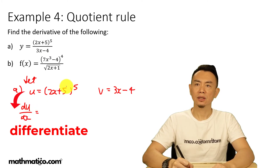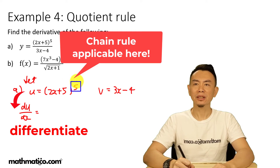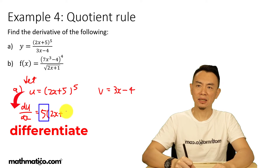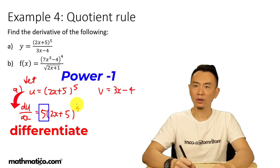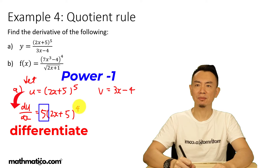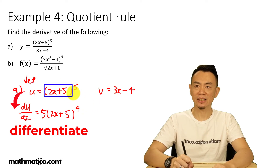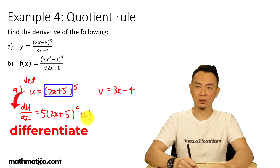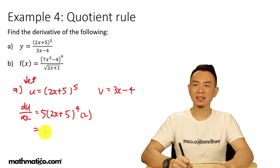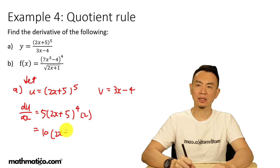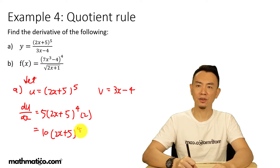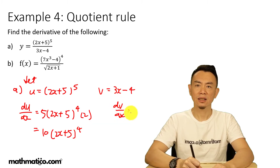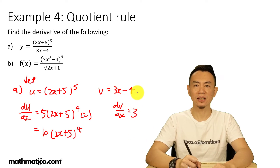Now we differentiate each one separately. For du/dx, we are going to use chain rule: bring down the power of 5, times (2x plus 5) to the power of 4 — power minus 1, so 5 minus 1 is 4 — times the differentiation of the inside. Differentiate 2x and you get 2; differentiate 5 is 0. So we simplify: 5 times 2 is 10 times (2x plus 5) to the power of 4. Then dv/dx equals 3, since differentiate 3x is 3.